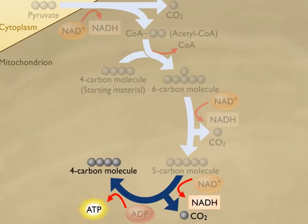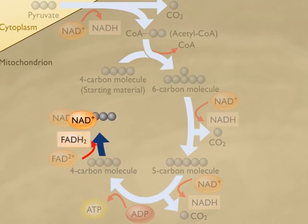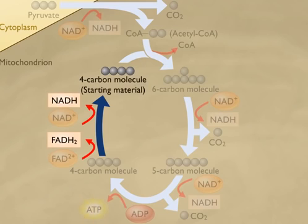In addition, a molecule of ATP is produced. As a result of these reactions, a four-carbon molecule is formed in the Krebs cycle. Finally, the four-carbon molecule is further oxidized and the hydrogens that are removed are used to form NADH and FADH2. These reactions regenerate the four-carbon molecule that initially reacts with acetyl CoA.